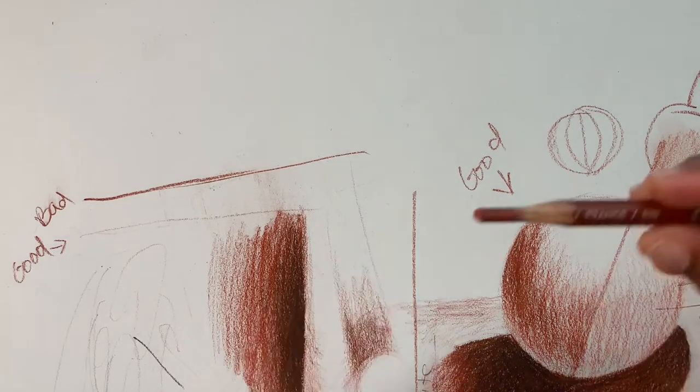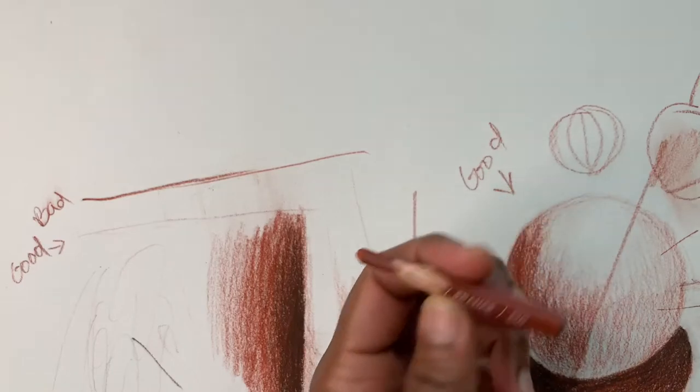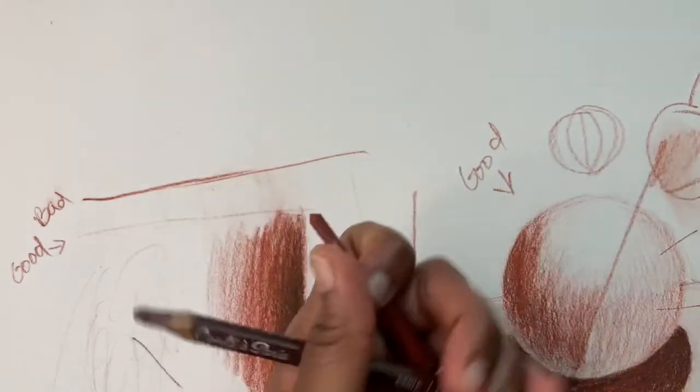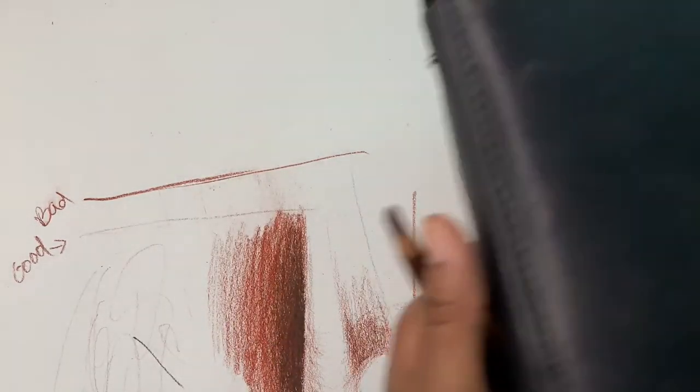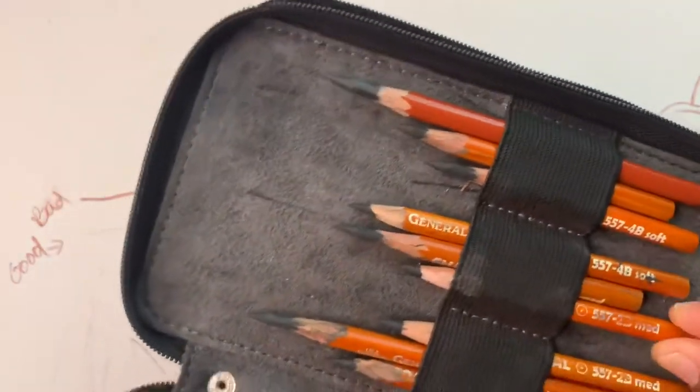Here are a few reminders when it comes to Conte. So I'm using the sanguine and the sepia, and if I need to go darker I'll add in a 2B charcoal pencil.